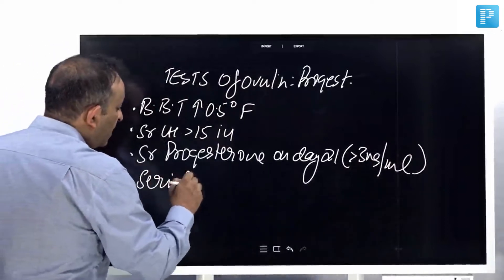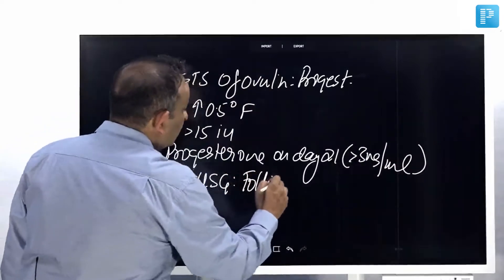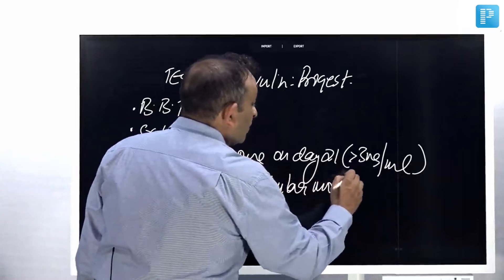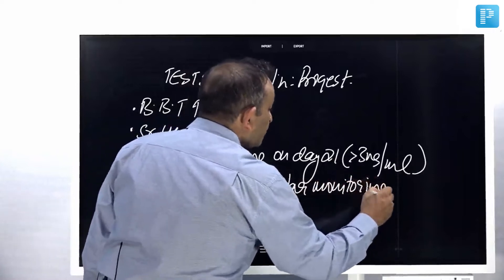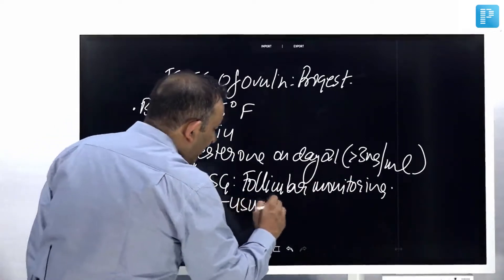Serial ultrasonography, also known as follicular monitoring, is the usual way to assess ovulation in outpatient departments.